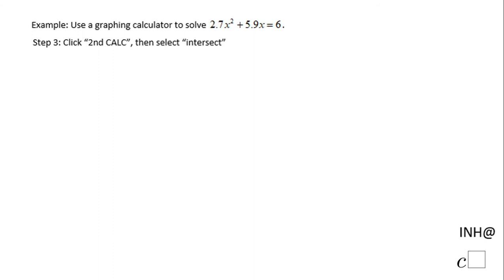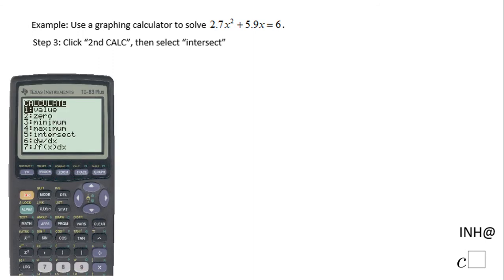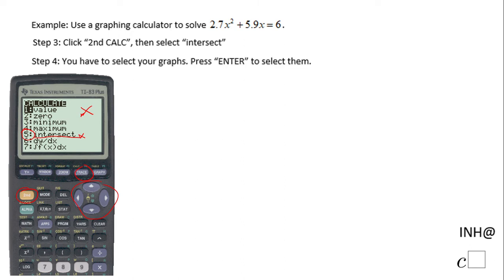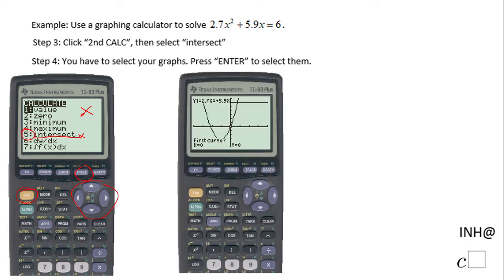You'll notice I said Second CALC here, so you're going to click this button and this button, and you're going to get this screen. You'll notice the number five here — it's called Intersect. So you can use the arrow and scroll down until it is the active icon, or you can simply click number five.